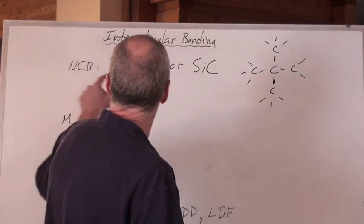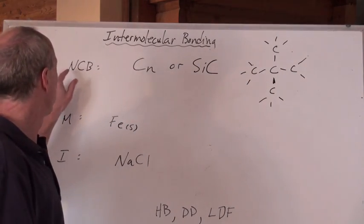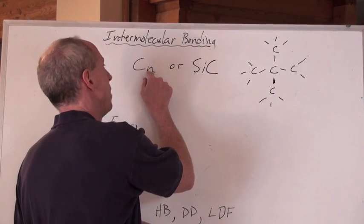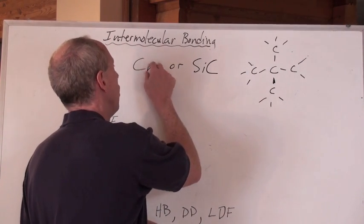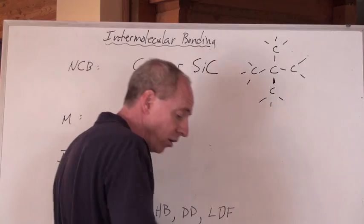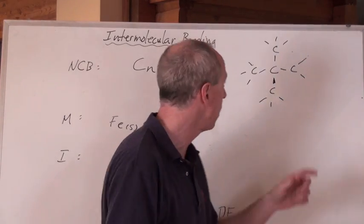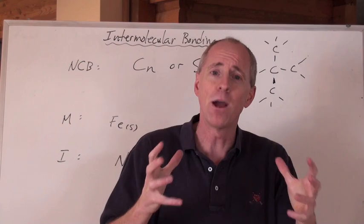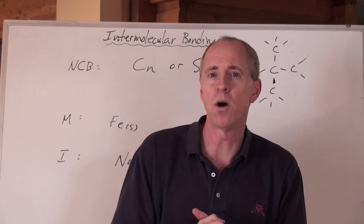Network covalent bonding, NCB there. Network covalent bonding is when you have a bunch of carbons, how many carbons? You don't know, that's where the N is, all attached to one another. Silicon carbide also does some network covalent bonding as well, and they just form a network of carbons spreading out, and that right there is the strongest type of bonding that we know.